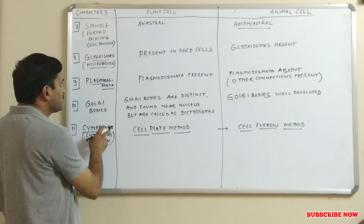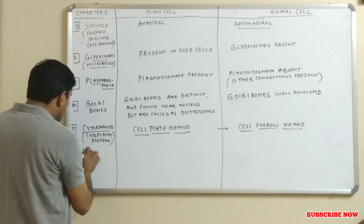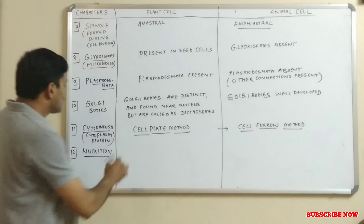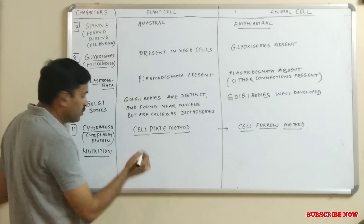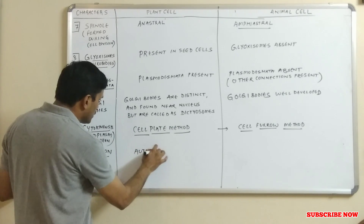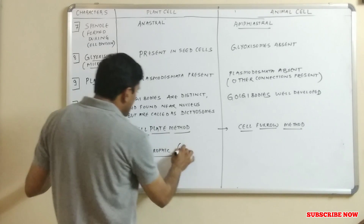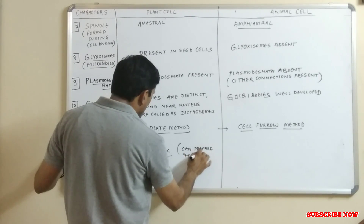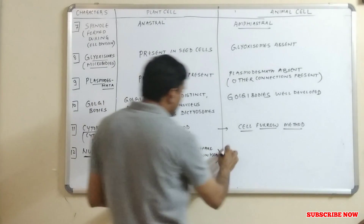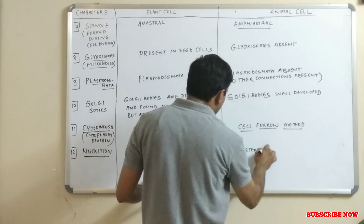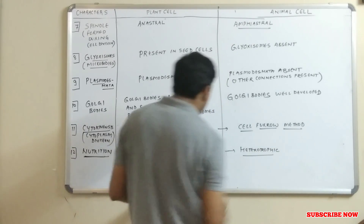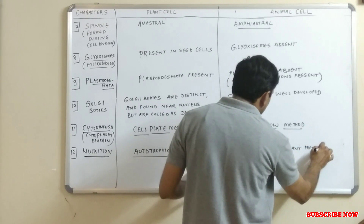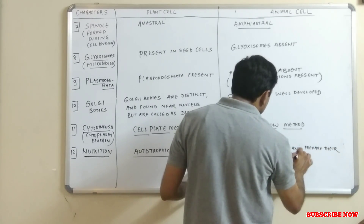One more point is about nutrition. Plant cells can prepare their own food, so they are autotrophic. Animal cells cannot prepare their own food, so they are heterotrophic.